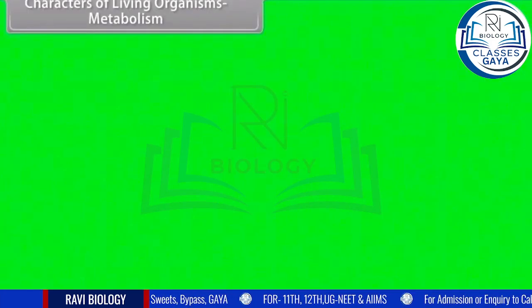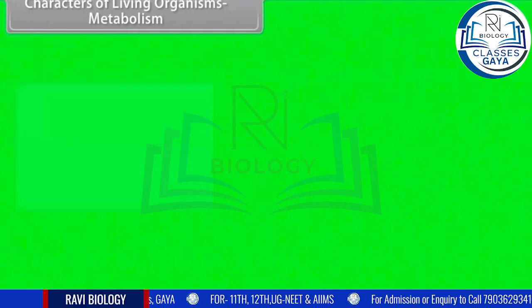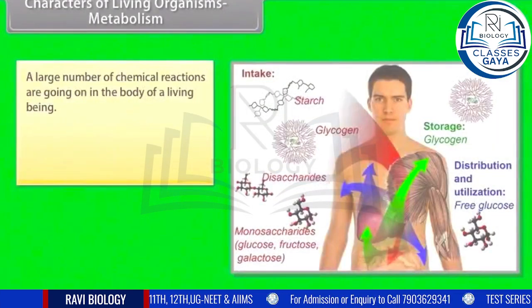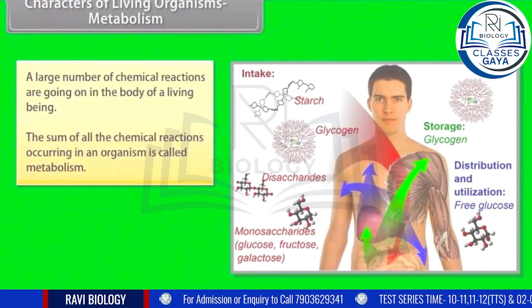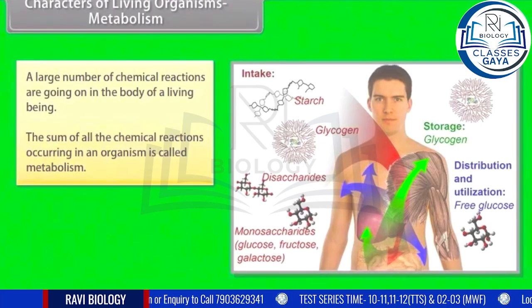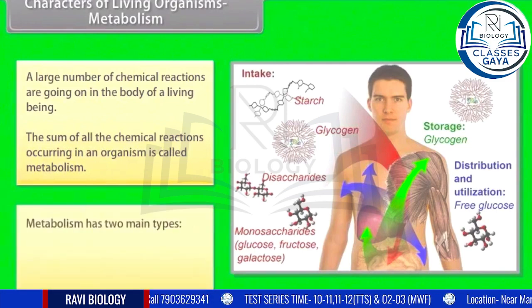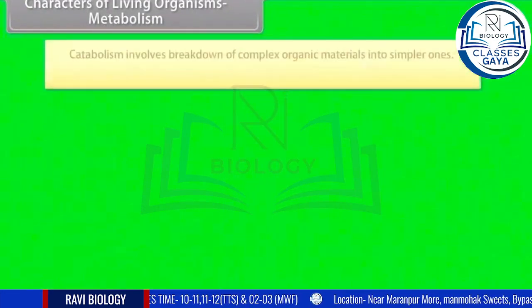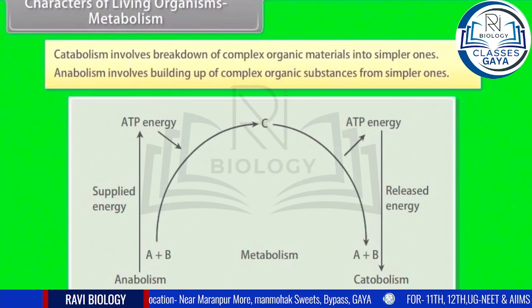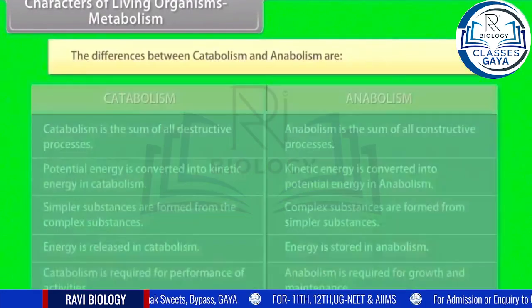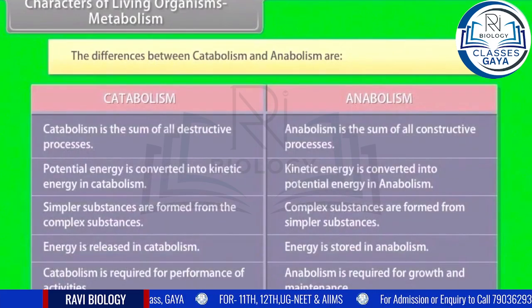Characters of living organisms — Metabolism: a large number of chemical reactions are going on in the body of a living being. The sum of all the chemical reactions occurring in an organism is called metabolism. Metabolism has two main types: catabolism, which involves the breakdown of complex organic materials into simpler ones; and anabolism, which involves building up of complex organic substances from simpler ones.